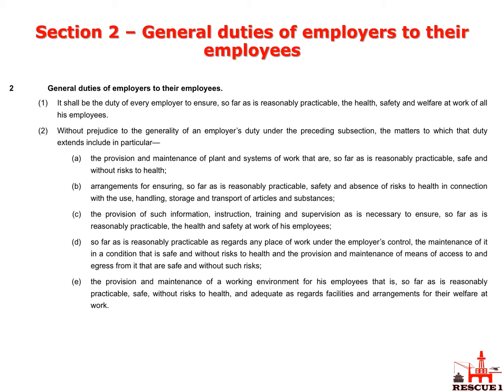We get to 2(a): plant and systems of work — you need safe plant and safe systems of work. Then 2(b): arrangements for ensuring, so far as reasonably practicable, safety and absence of risk to health in connection with the use, handling, storage and transport of articles and substances. That one is also self-explanatory.